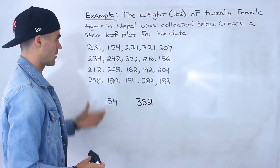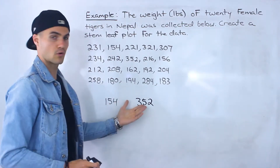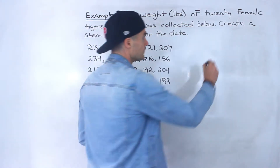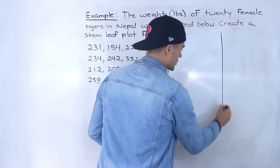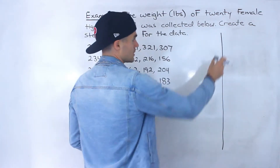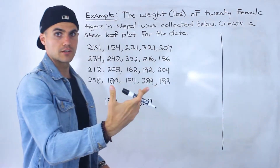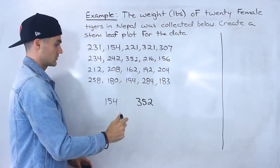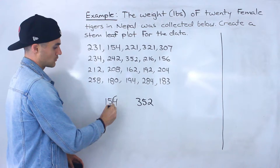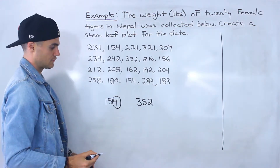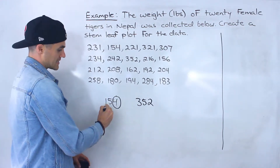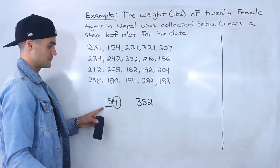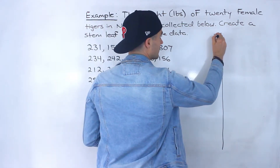So all of the weights are fluctuating between 154 and 352. With a stem-leaf plot, as I've mentioned in previous videos, the leaf always has to be a single digit — it's always going to be the rightmost single digit. So the rightmost digit of 154 is 4, which means the first stem is going to be the remaining digits: 15.